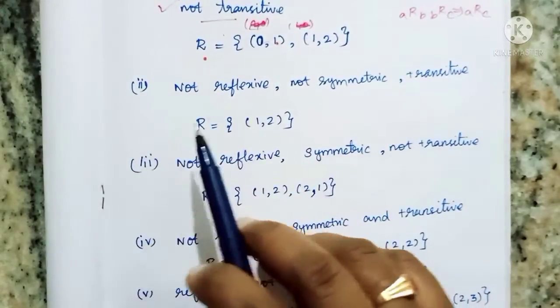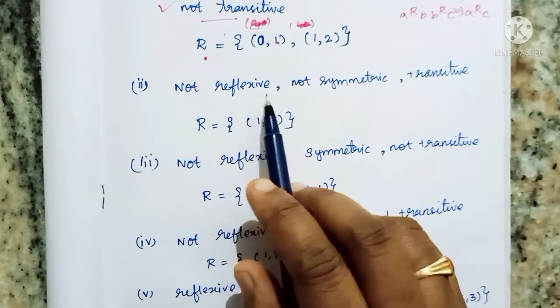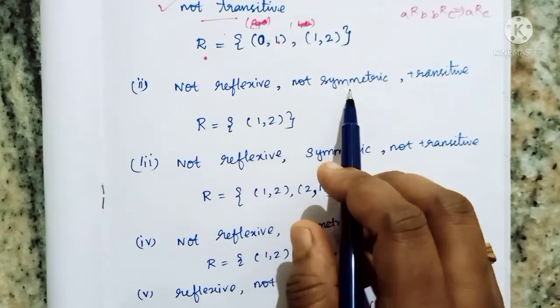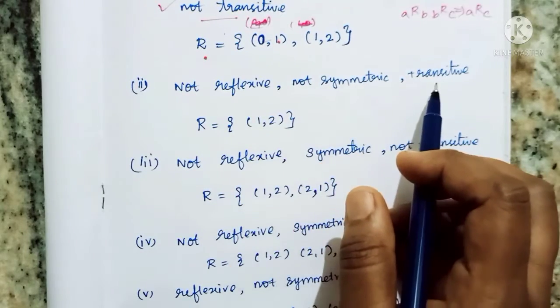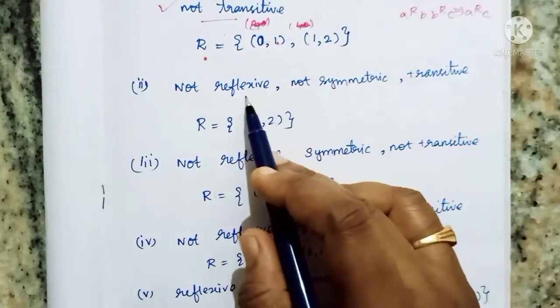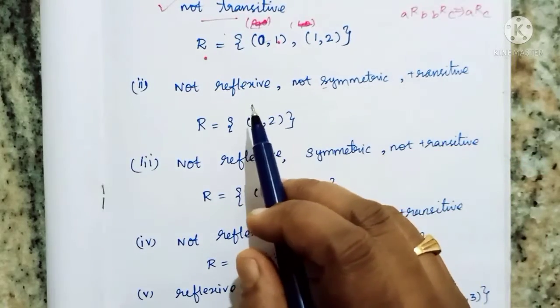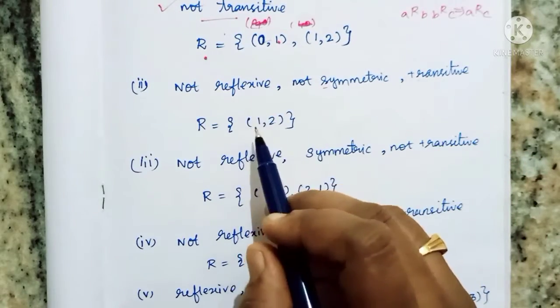Next is the second subdivision: not reflexive, not symmetric, then it is transitive. Now these two conditions are also transitive.